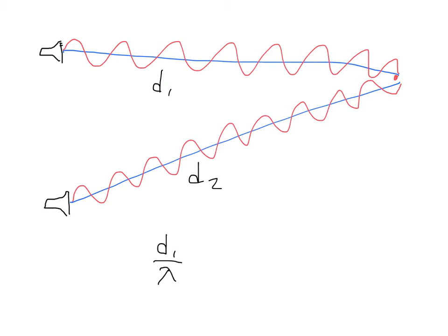And the same thing applies with D2. If one wave has oscillated more than the other, then when they arrive, it will look like they've come together out of phase with each other. Depending on how much out of phase they are, they could be completely destructive, maybe only somewhat destructive, or it's also possible that the number of wave cycles will make it constructive again.